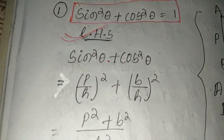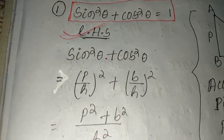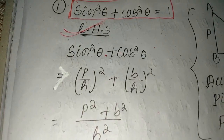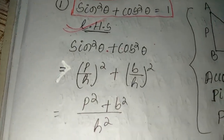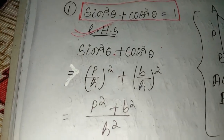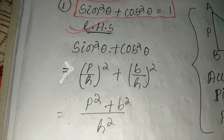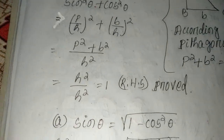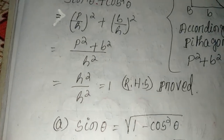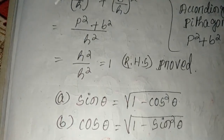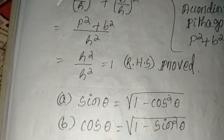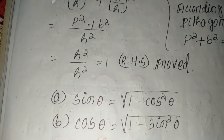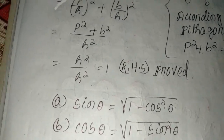From this equation we get two new formulas: sin theta equals the square root of (1 − cos²θ), and cos theta equals the square root of (1 − sin²θ).